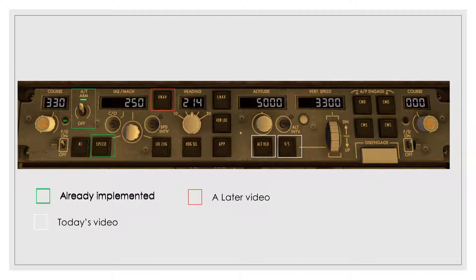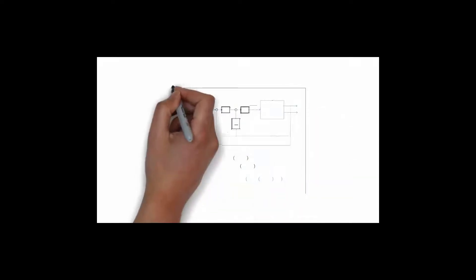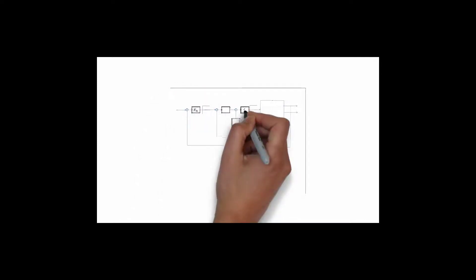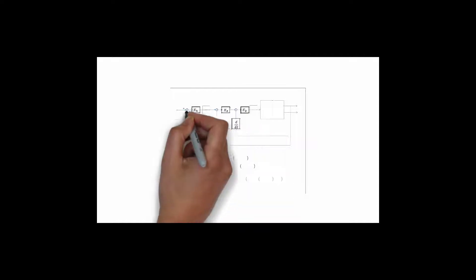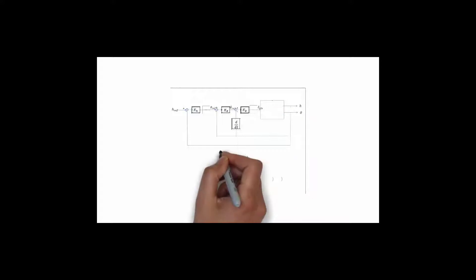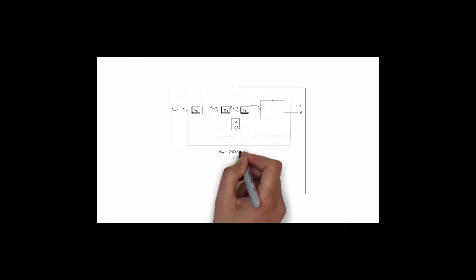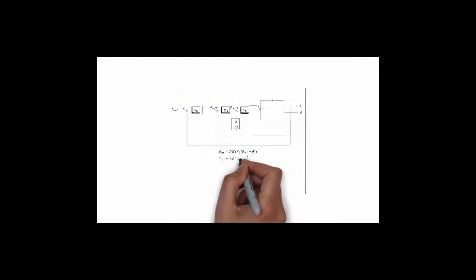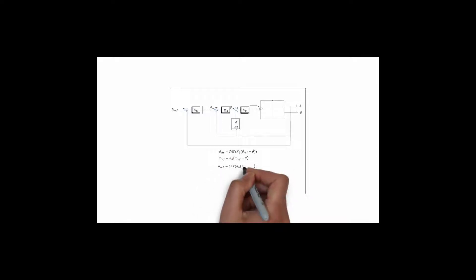Let's begin with the altitude hold mode. This is implemented using a cascade with the inner loop in the previously developed pitch controller, which is preferably the cascade controller. This is the typical architecture of an altitude cascade controller adapted to the sensors we have in X-Plane. Note that we added also some saturation blocks. Finally we get the following equations to calculate the elevator deflection. Let's write that down in MATLAB.